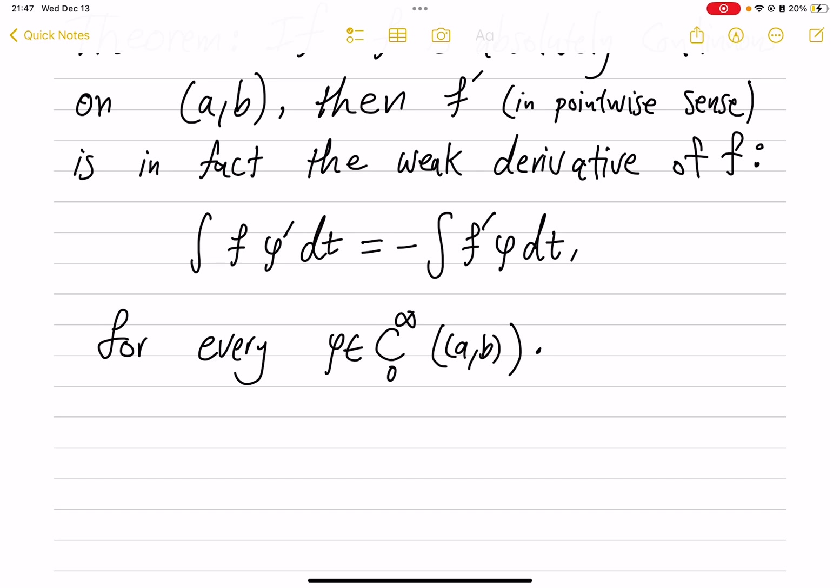This is saying that the integration by parts holds. Any function that makes this satisfied in place of f prime would be the weak derivative of f. So the classical derivative f prime is in fact the weak derivative. Because we saw that f prime is integrable and if f itself is integrable, so if f is in L¹, then f is in L¹, f prime is in L¹, and we have the weak derivative. That means f is in the Sobolev class W^{1,1}(a,b). And that is the connection to Sobolev theory.